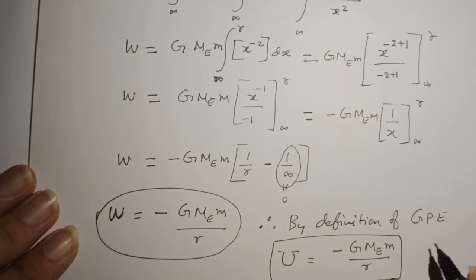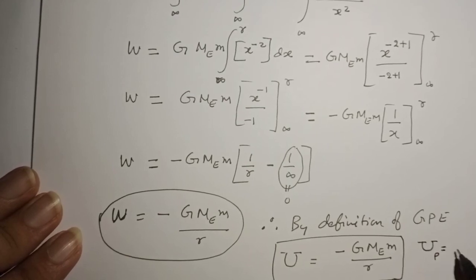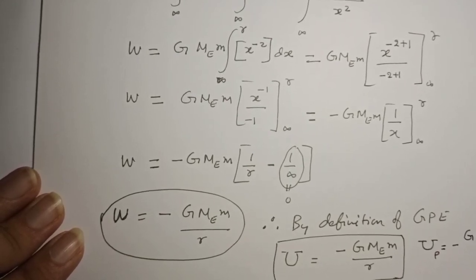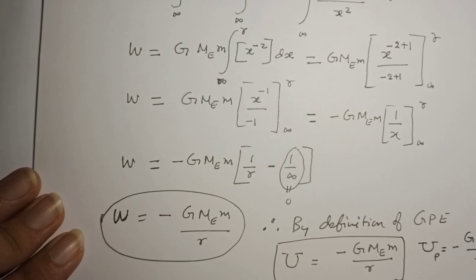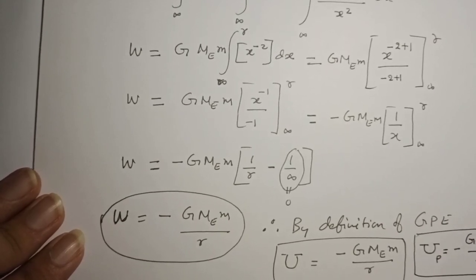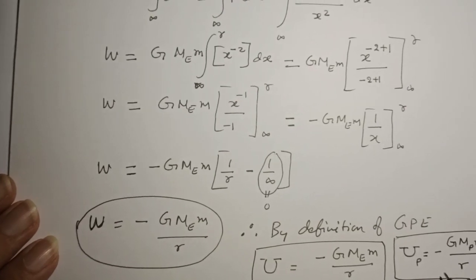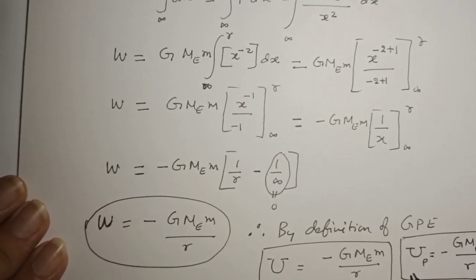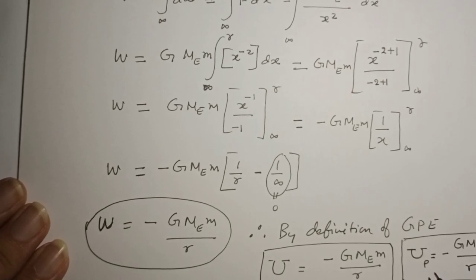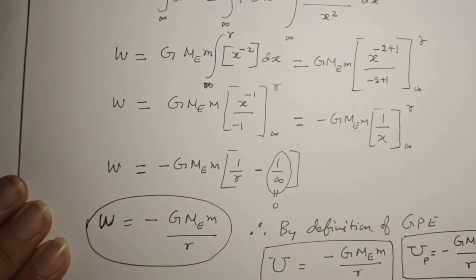This can be used in general: gravitational potential energy for any planet equals minus G times mass of that planet times mass of the particle divided by r. This negative potential energy indicates that the force is attractive. Thank you very much.